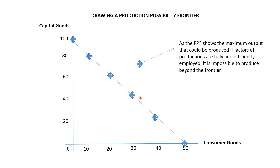As all points on the PPF are productively efficient — representing the maximum output possible from the factor inputs we have — it is impossible to produce at a point beyond your PPF. This is something that appears in exam questions quite a lot. They'll give you multiple choice questions and say which of these points is unachievable, and the answer would be the point beyond the frontier, as it is beyond the maximum that the economy can produce.